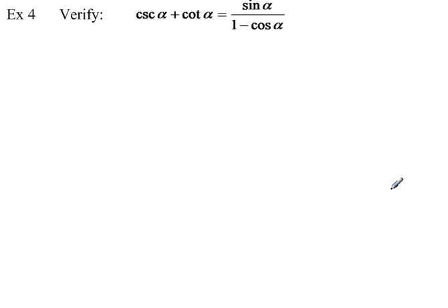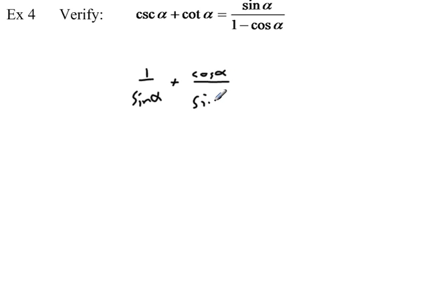One last example: cosecant of alpha plus cotangent of alpha equals sine of alpha over one minus cosine of alpha. I'll leave the variable as alpha. Converting to sine and cosine: cosecant is one over sine of alpha, and cotangent is cosine of alpha over sine of alpha. Since we have a common denominator, we can write one plus cosine of alpha over sine of alpha.